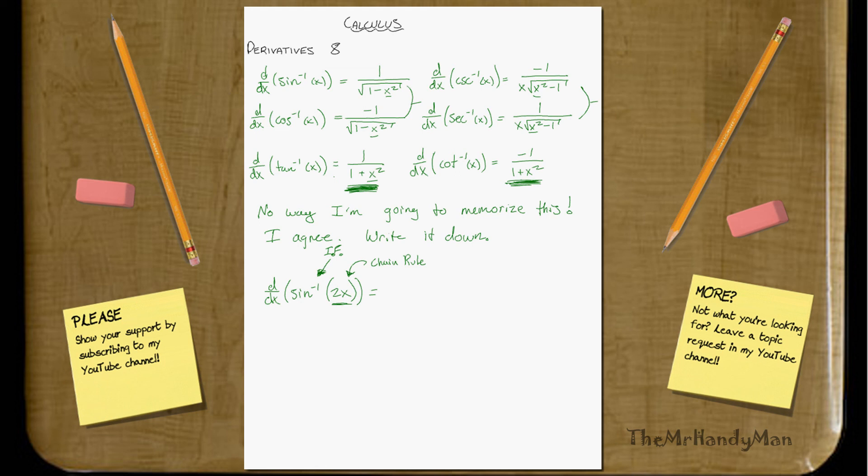Sign negative 1 of 2x, well, we just look up above. y prime is going to equal 1 over the square root of 1 minus, now it says x squared, right? We're going to put 2x squared. We're just replacing the x with 2x, that's all we did. Now, then we multiply the whole function by the derivative of 2x, which is 2. Super simple.